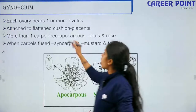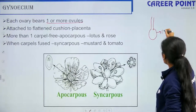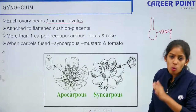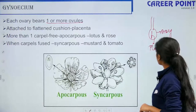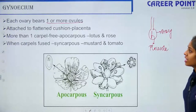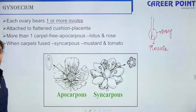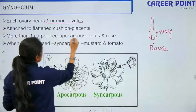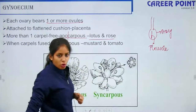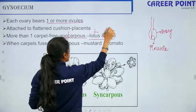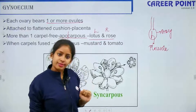Every ovary bears one or more ovules. The ovules are attached to a cushion known as the placenta. When you have more than one carpel and the carpels are free from each other, that condition is known as apocarpous — example is lotus and rose.